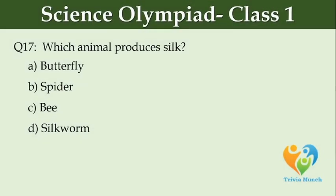Which animal produces silk? Option A: Butterfly. Option B: Spider. Option C: Bee. Option D: Silkworm.